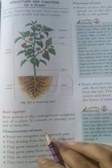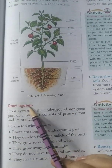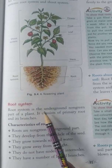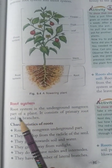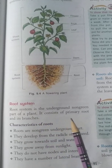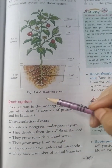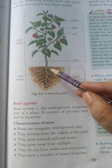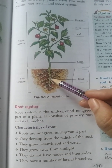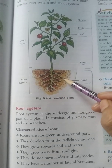The root system is the underground, non-green part of a plant. It consists of a primary root and its branches. As you can see in the picture, it consists of a primary root and its branches.